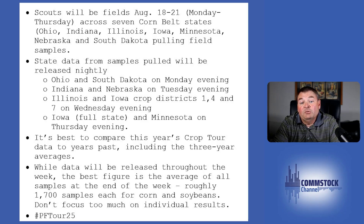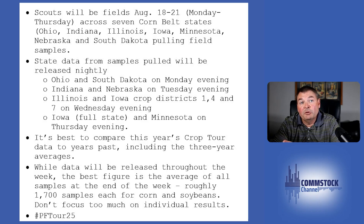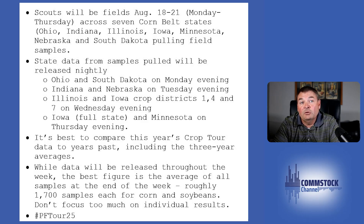Keep in mind that as we go through these numbers, it's best to compare to past years to get an apples-to-apples comparison. What did these areas and routes find last year, and what did they find for the three-year averages from those respective routes? The routes are predetermined, but the stops are not. Scouts are asked to stop randomly roughly every 15 miles along predetermined routes. There are 11 different routes on the eastern side and 10 on the western side.